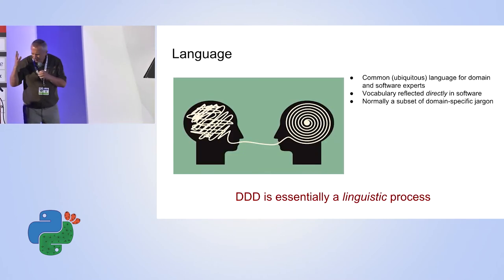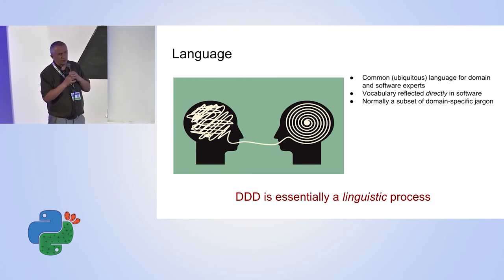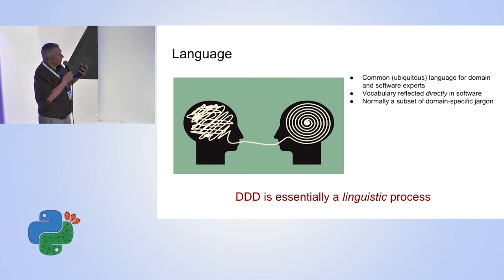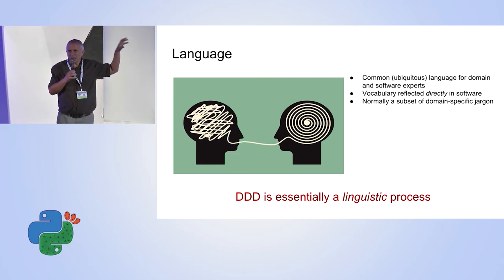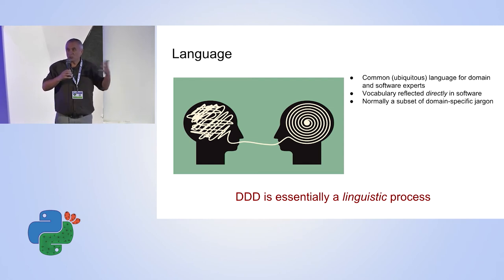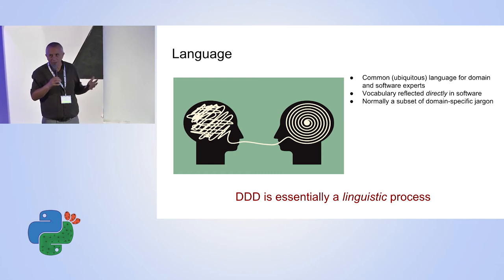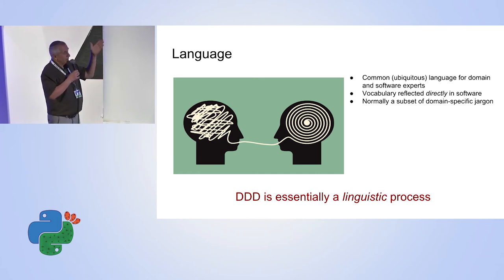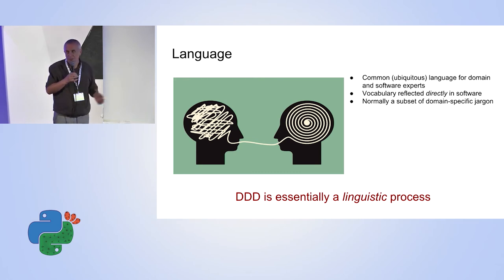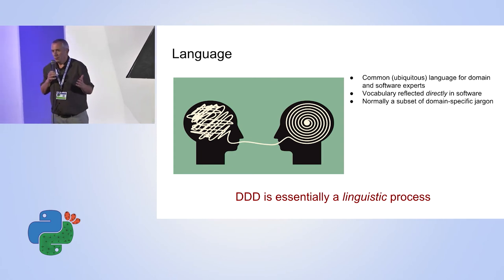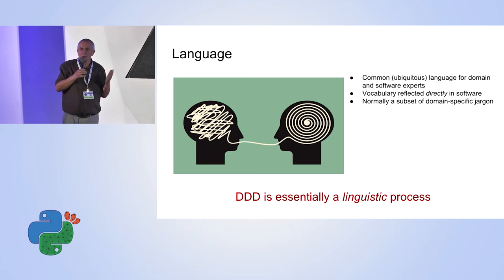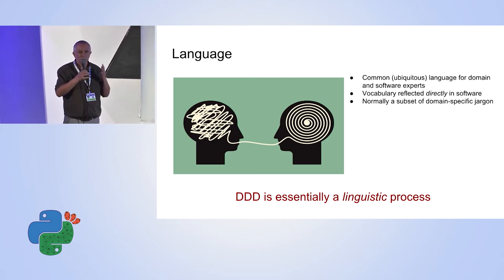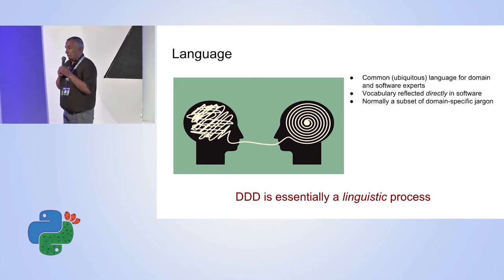Language plays an extremely important role in domain-driven design — they call it ubiquitous language. Domain experts, the business people, have the right picture of the world in their heads. The problem is that picture is extremely messy, reflecting a world that is fully connected and not separated into modules. If we don't have a common language, we could come up with bug-free software that does something wrong or harmful. Engineering-wise we can create bug-free software, but the big challenge is developing the right software.